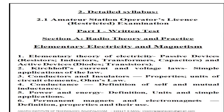Written Test, Section A: Radio Theory and Practice. Topics include Elementary Electricity and Magnetism, Elementary Theory of Electricity, Passive Devices - Resistors, Inductors, Transformers, Capacitors - and Active Devices - Diodes and Transistors. Also covered: Kirchhoff's Current and Voltage Laws, simple applications of the laws, and Conductors and Insulators.